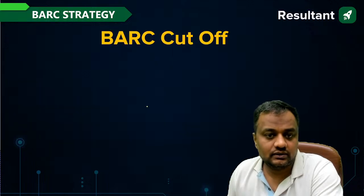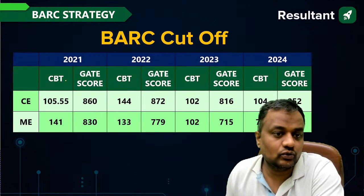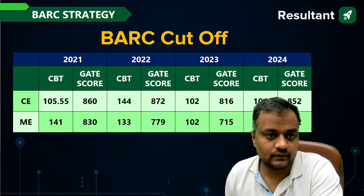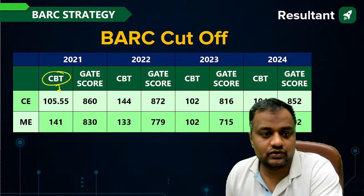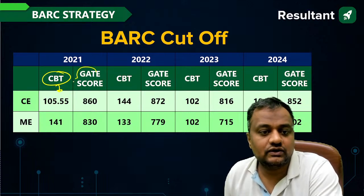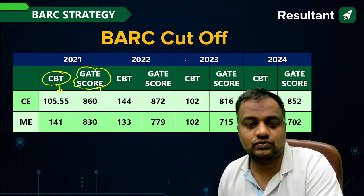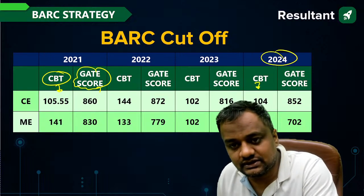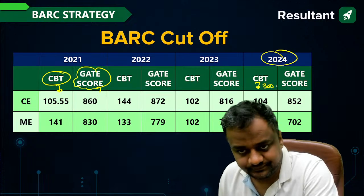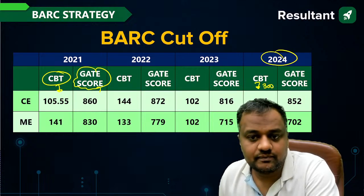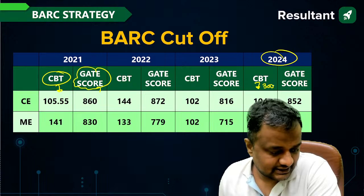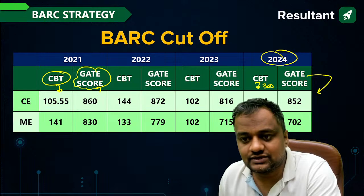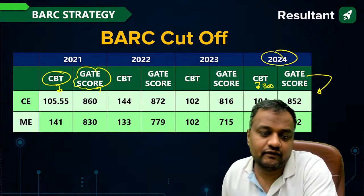Regarding cutoff over the last few years — from the computer-based test, the cutoff out of 300 is the same across General, SC, OBC, EWS, and ST categories. For 2024, the CBT cutoff was around 102–120 out of 300. From the GATE score route, the cutoff was 852.